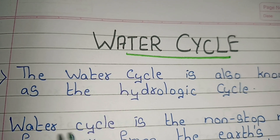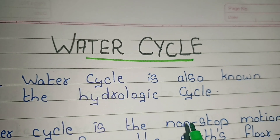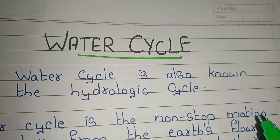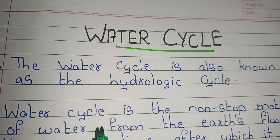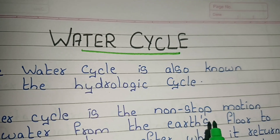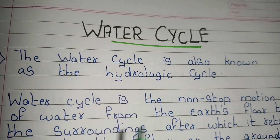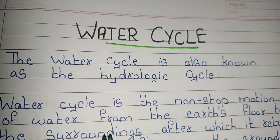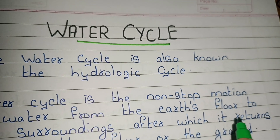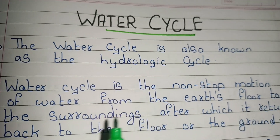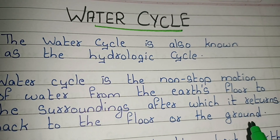Water cycle is the non-stop motion of water from the earth's floor to the surroundings, after which it returns back to the floor or the ground.